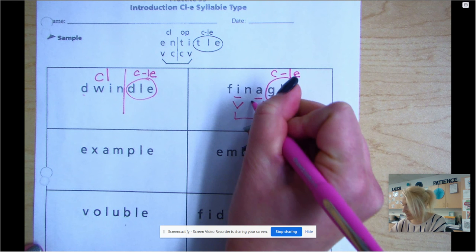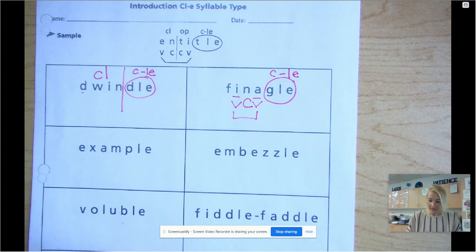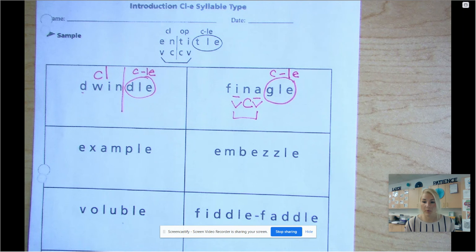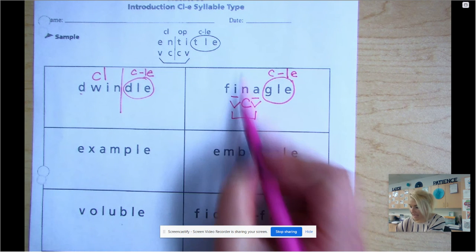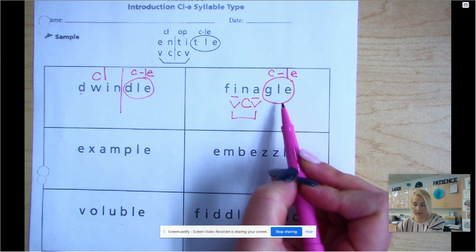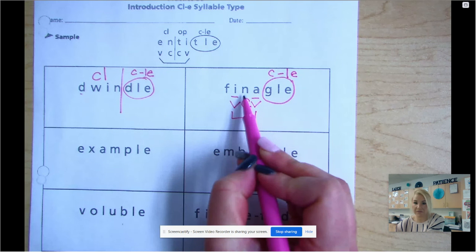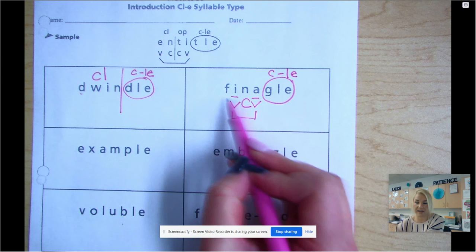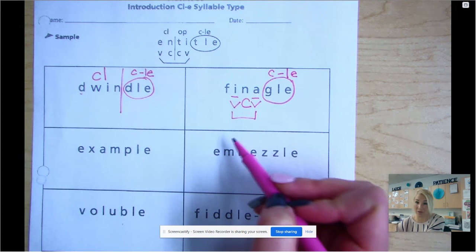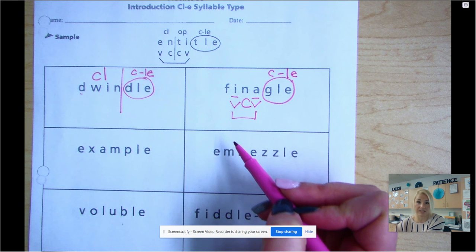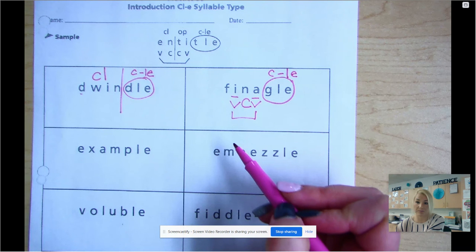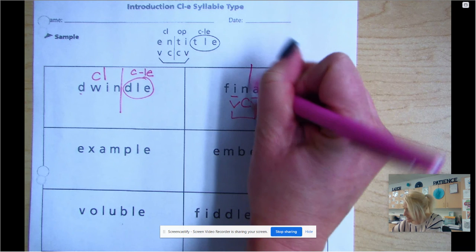And then I'm going to draw my bridge, label my consonant, and it's not my favorite pattern. This one I have a VCV pattern, which means I'm going to have to say it both ways to figure out where I'm going to divide. So I could say fi-na-gul, or I could say fin-a-gul. And I know that that's a word, so I'm going to go that route. If you're unsure what the word sounds like, you can always listen to it on dictionary.com to know where to divide.